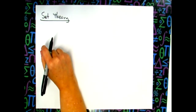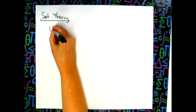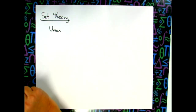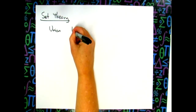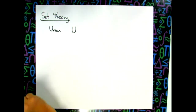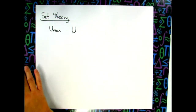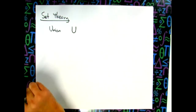They're going to introduce two concepts. First is something called a union. The mathematical symbol for union, when hand-drawn, looks like an upright U. When you see it in a textbook or typed, it'll look a little more precise than the hand-drawn version.